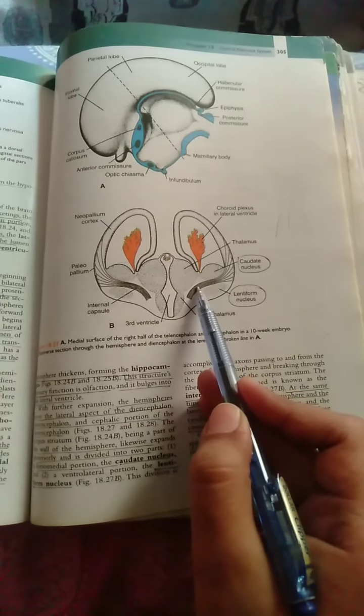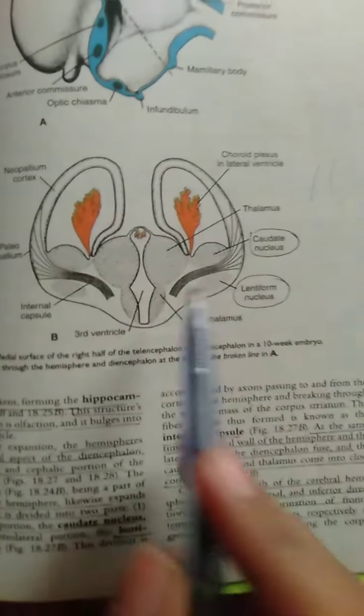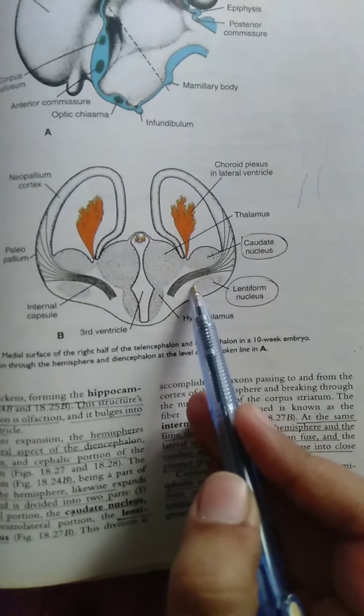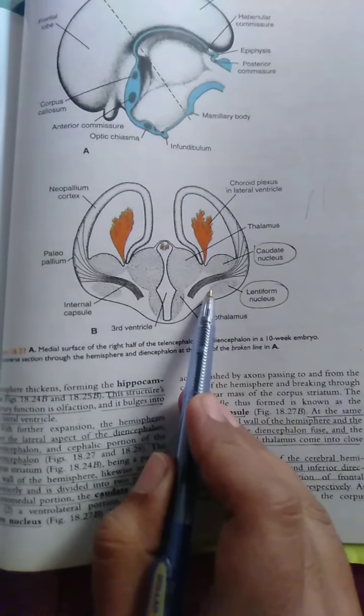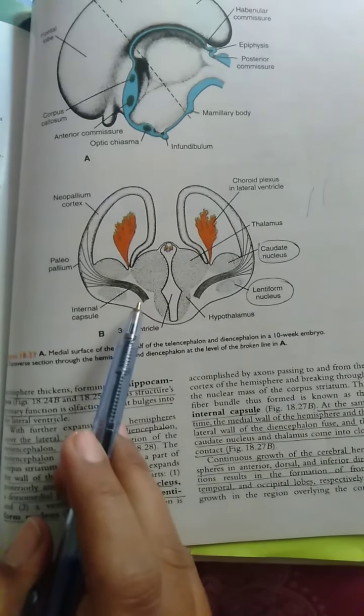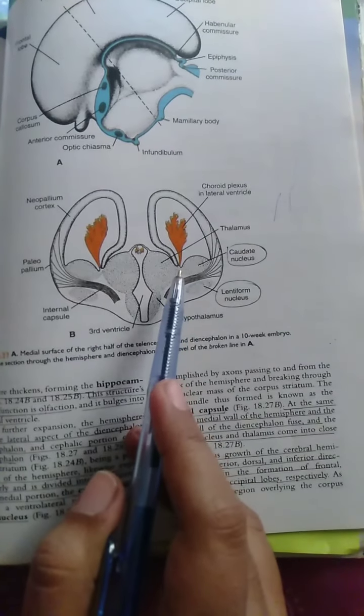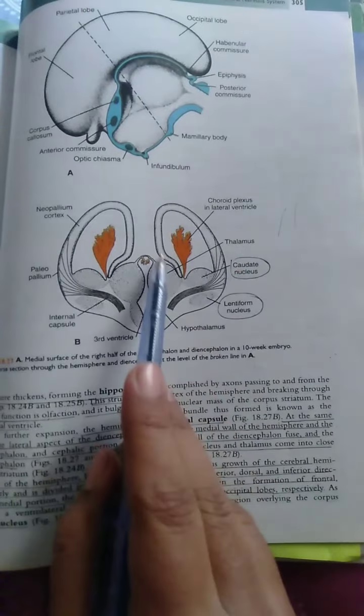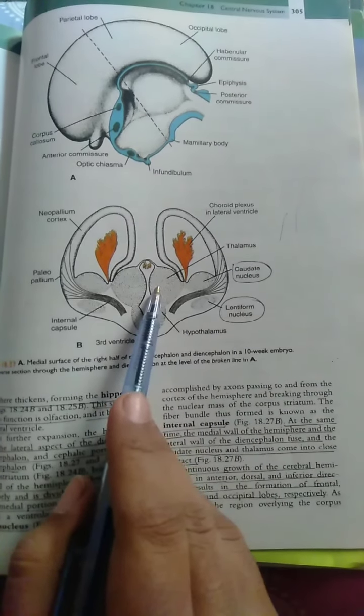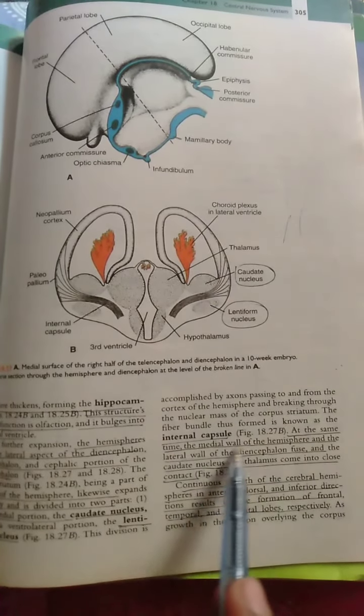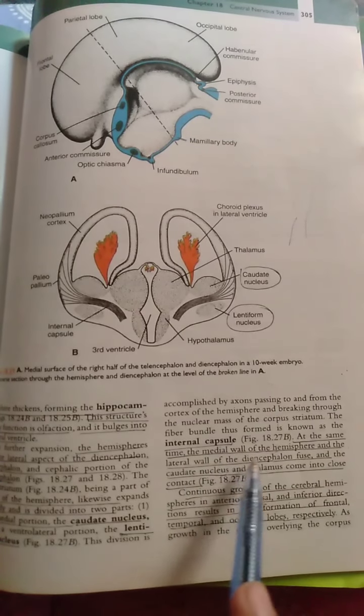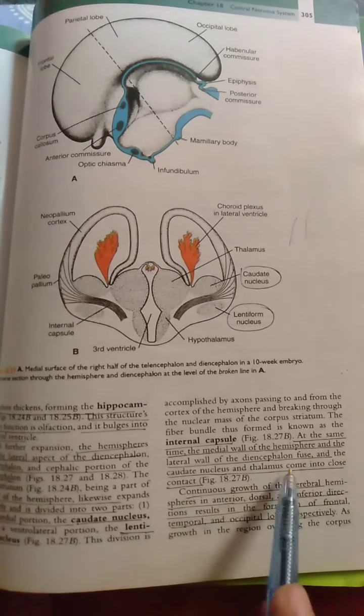Corpus striatum will fuse with caudate nucleus. The lateral wall of diencephalon with caudate nucleus and the thalamus will be close at the same time. Medial wall of the hemisphere will be the lateral wall of the diencephalon. Caudate nucleus and thalamus will be close to each other.